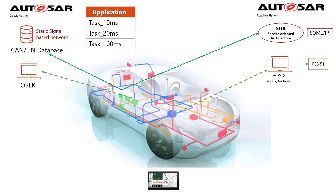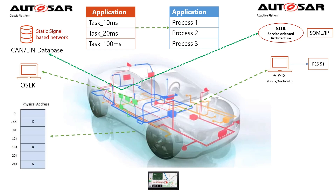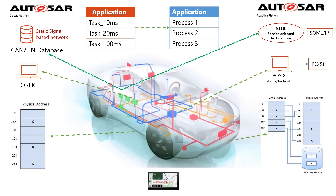In Classic, software components are built up from Runnable Entities and executed by a Task. The smallest entity in the Adaptive Platform is the Process Executable Entity. Regarding memory, the main difference is that in the Classic Platform the OS performs operations directly on physical memory addresses, which have very limited space. In the Adaptive Platform, virtual addressing and MMU support allow the application to be given much more memory space and resources.